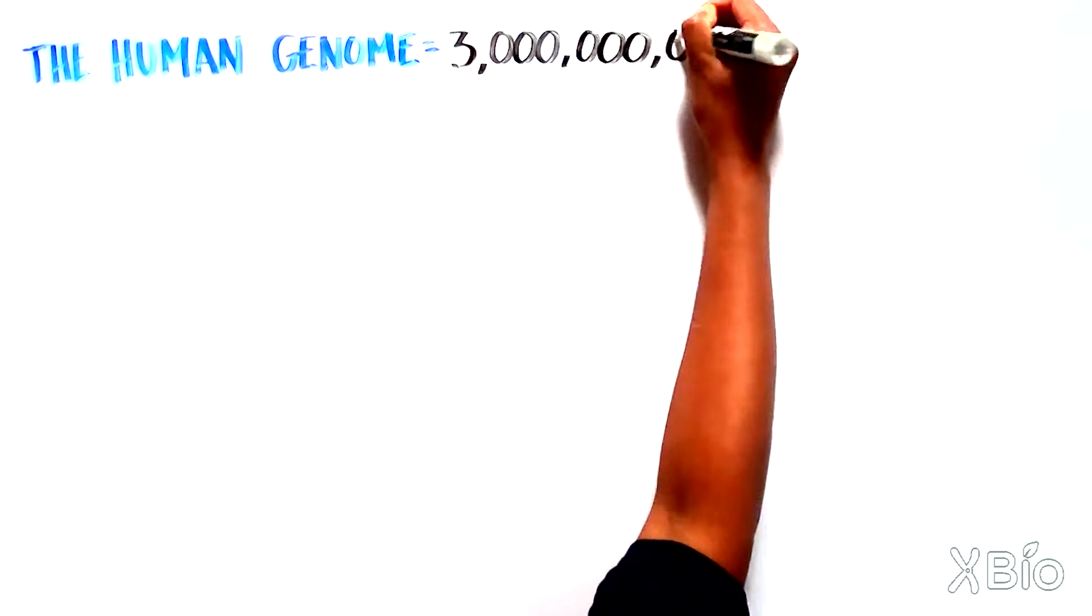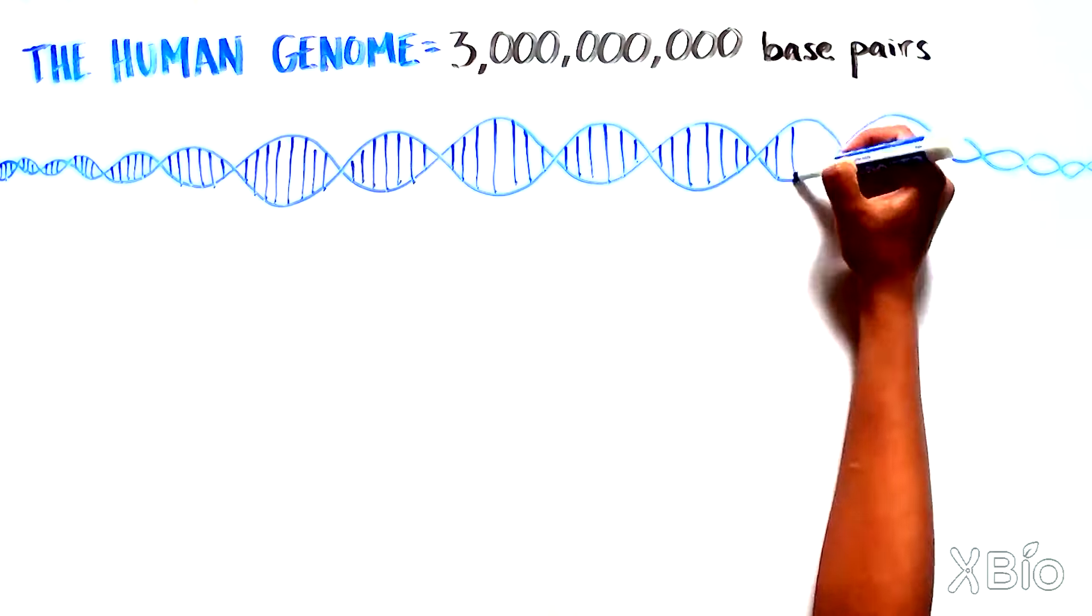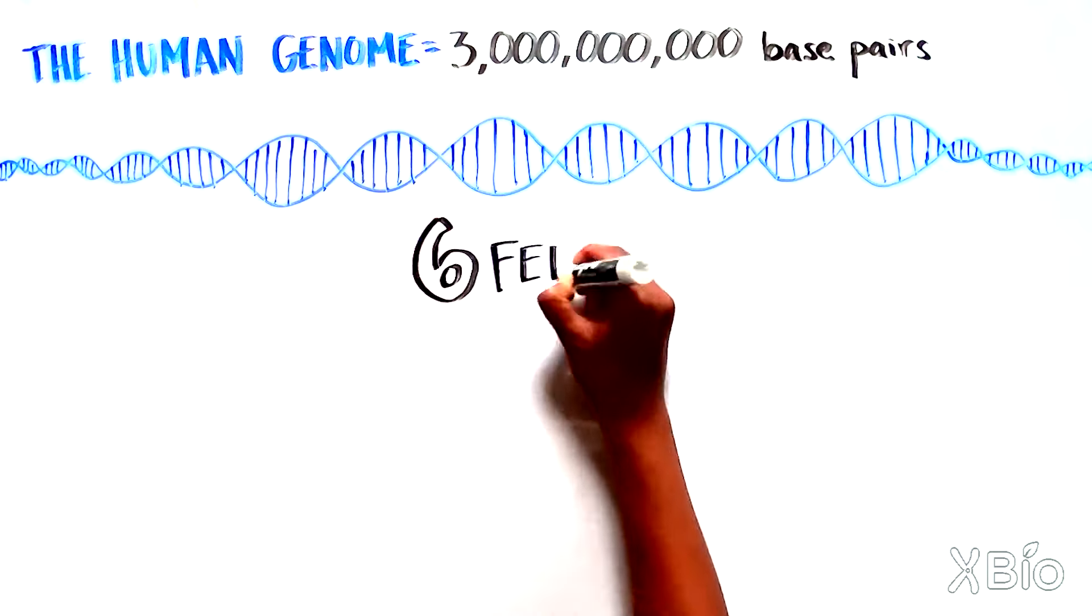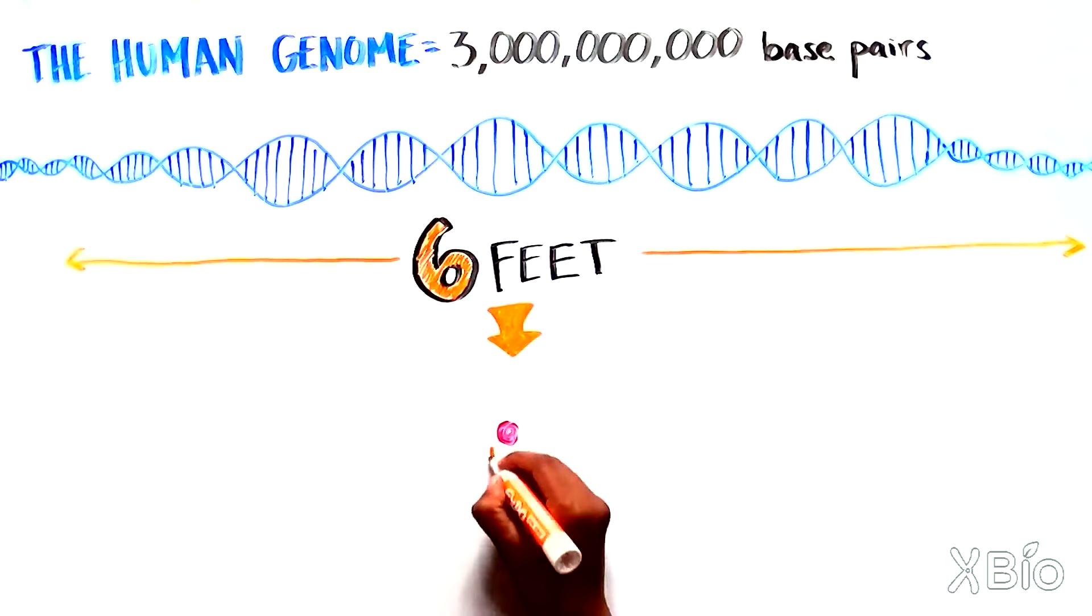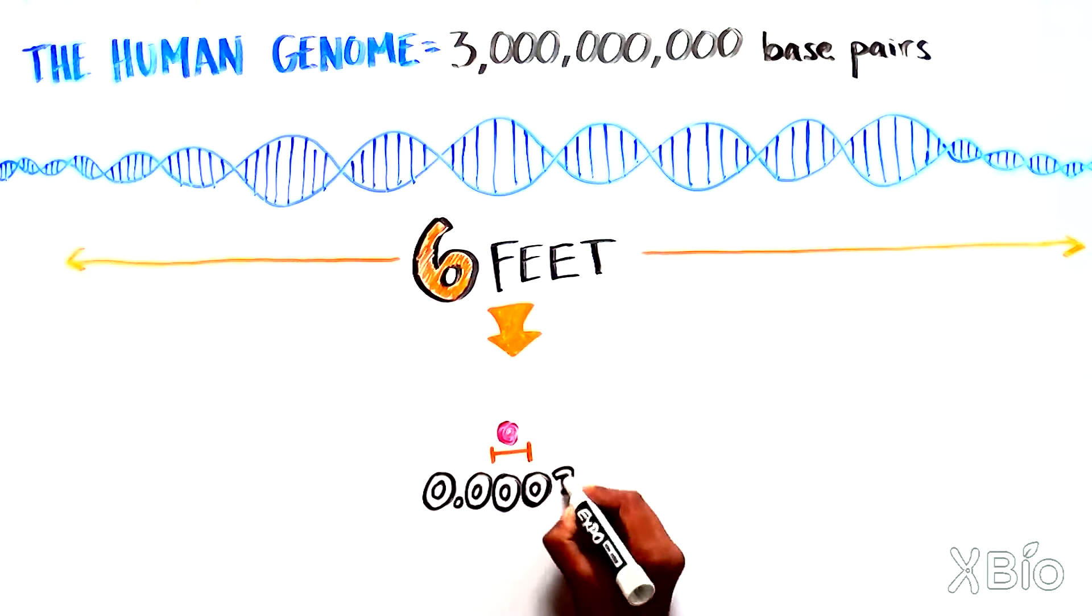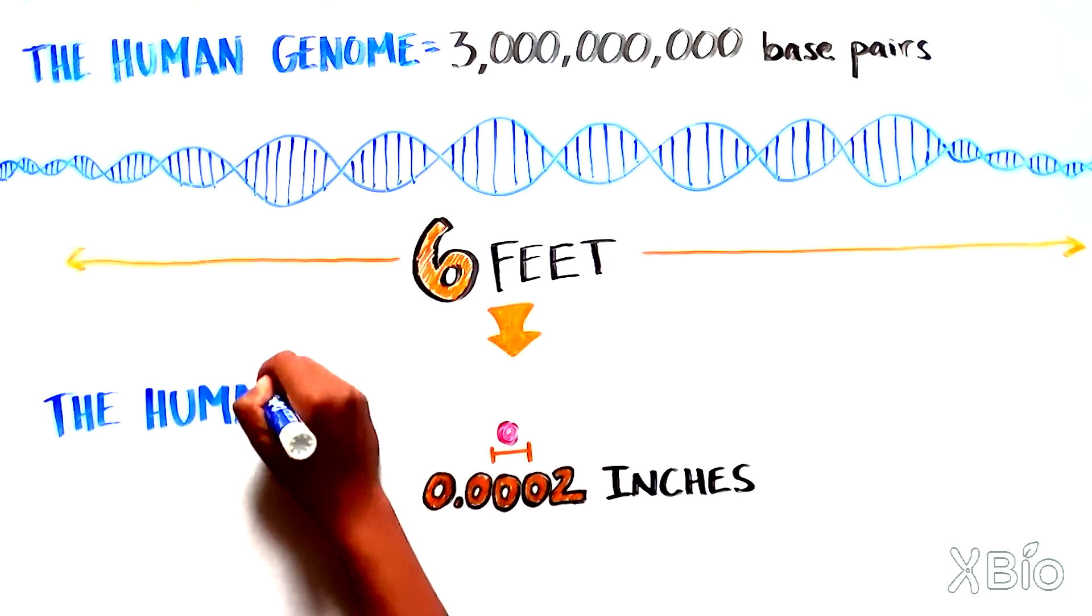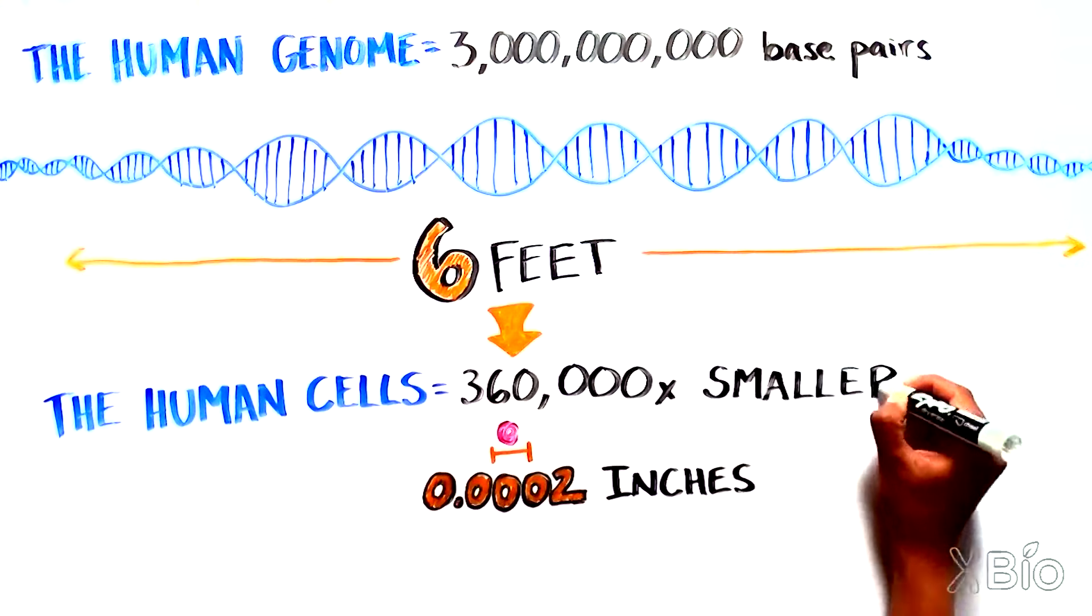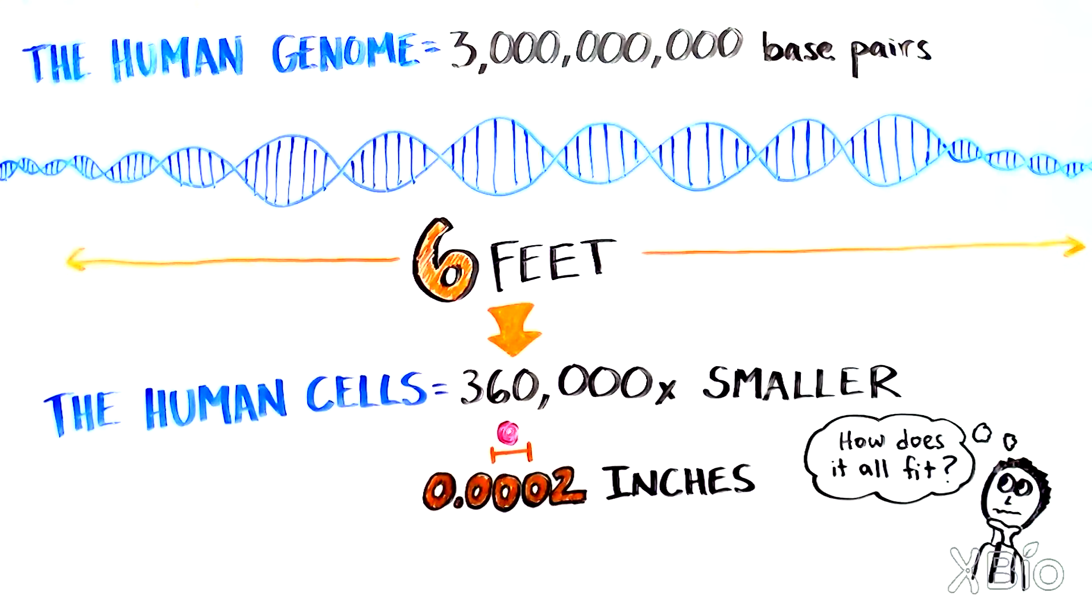The human genome contains over 3 billion base pairs of genetic information. If it were stretched out end to end, it would span approximately 6 feet, but each human cell that houses all this information is about 0.0002 inches across, approximately 360,000 times smaller than the length of all of our genetic information laid out side by side. So how in the world are we able to fit that massive amount of information into a tiny cell?